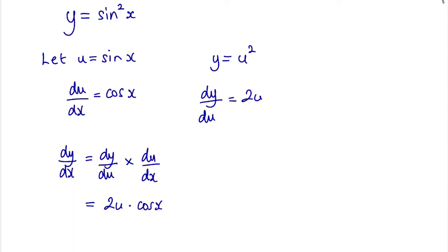Now let's substitute back in u where u is sine x so what we get is 2 sine x cosine x.